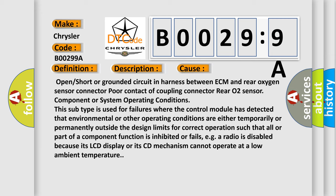Open or short or grounded circuit in harness between ECM and rear oxygen sensor connector, poor contact of coupling connector, rear O2 sensor component or system operating conditions. This subtype is used for failures where the control module has detected that environmental or other operating conditions are either temporarily or permanently outside the design limits for correct operation, such that all or part of a component function is inhibited or fails. For example, a radio is disabled because its LCD display or its CD mechanism cannot operate at a low ambient temperature.